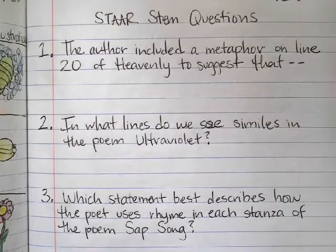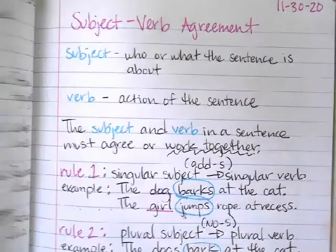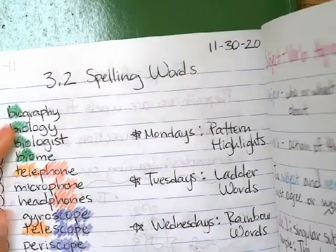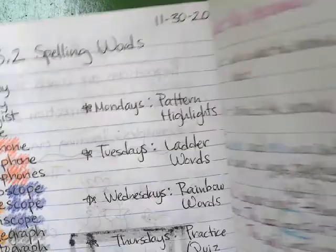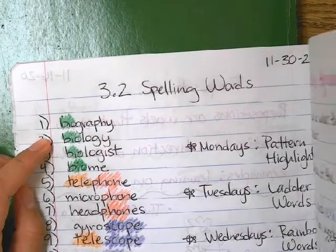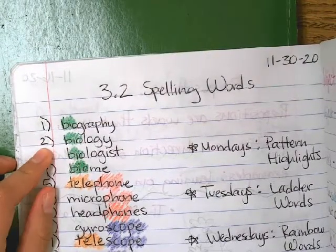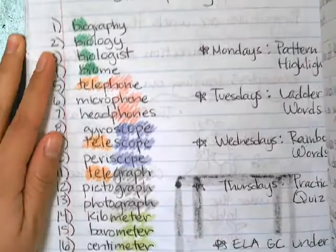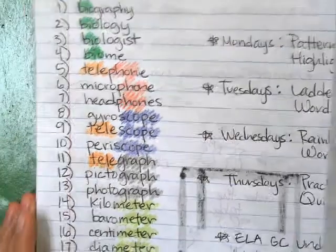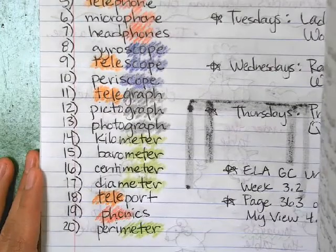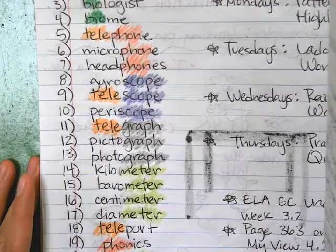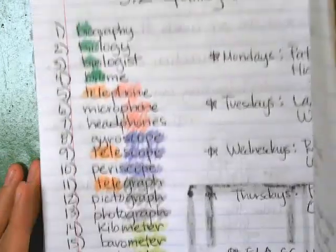After that, I just wanted to let you all know that today's homework is rainbow words. So we write the word one time and then we write it again in different colors. Make sure you do that for homework — your spelling words homework. You should have already written this on Monday.